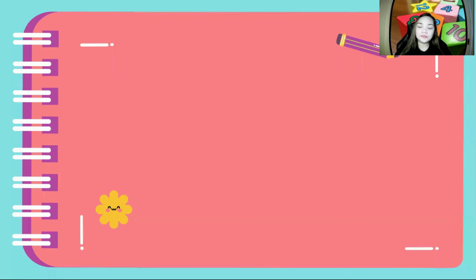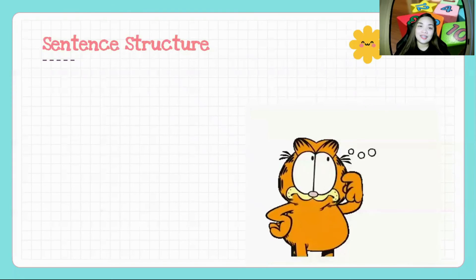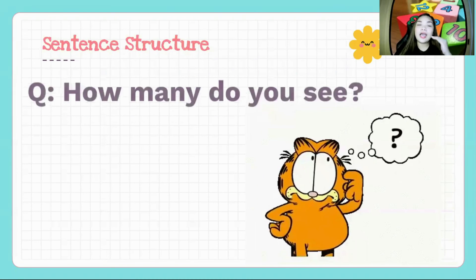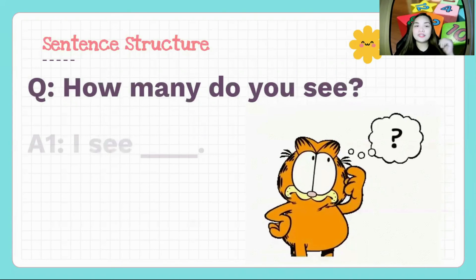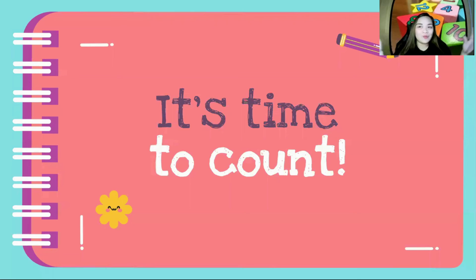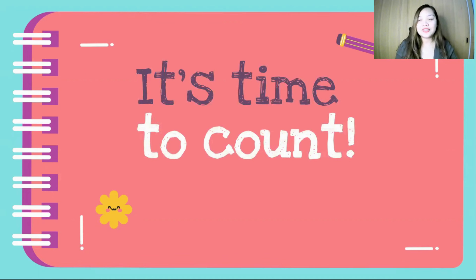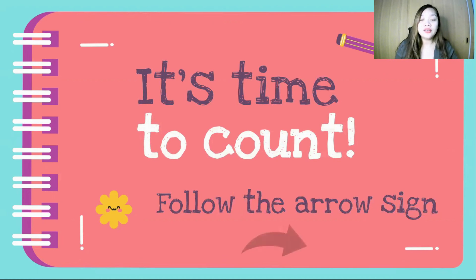How about we talk about counting numbers 1 to 10? That's right, so we're going to count the numbers 1 to 10. The second structure we're going to learn is: how many do you see? And then you're going to say 'I see' and then say the number. Now let's begin. Students, we're going to count from 1 to 10. This will show you pictures of animals on the screen and then we are going to count them. You have to follow the arrow sign shown on the screen.